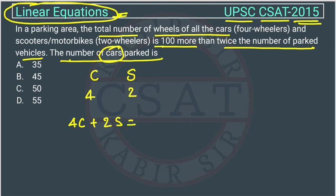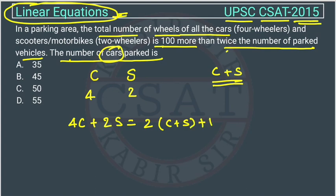This total wheel count is equal to 100 more than twice the number of parked vehicles. The number of parked vehicles will be C plus S — that is the total vehicles. So they have given it is equal to twice the number of parked vehicles plus 100.